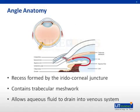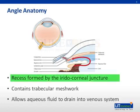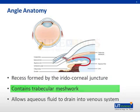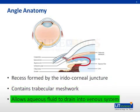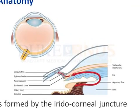To better understand the pathophysiology of glaucoma, let's review the anatomy of the angle. The angle is the recess formed by the iridocorneal juncture and contains the trabecular meshwork. This meshwork transmits aqueous fluid and allows it to drain via Schlemm's canal into the venous system. Aqueous humor is produced by the ciliary body, flows through the pupil, drains through the anterior chamber angle, and exits the eye, as illustrated in the diagram.